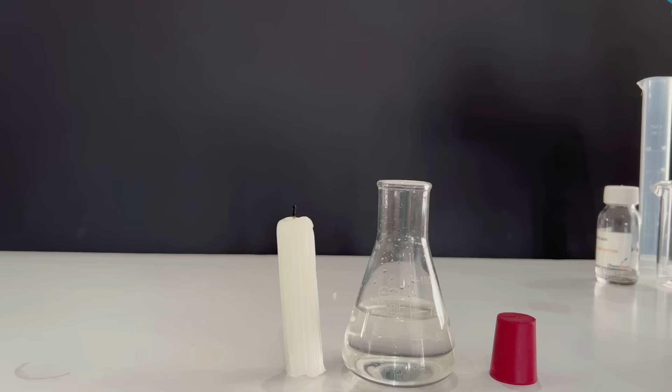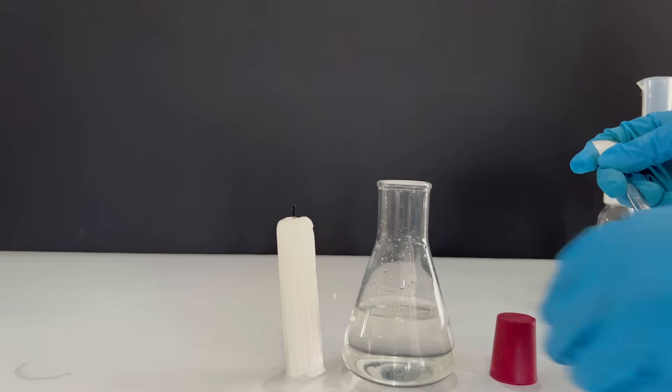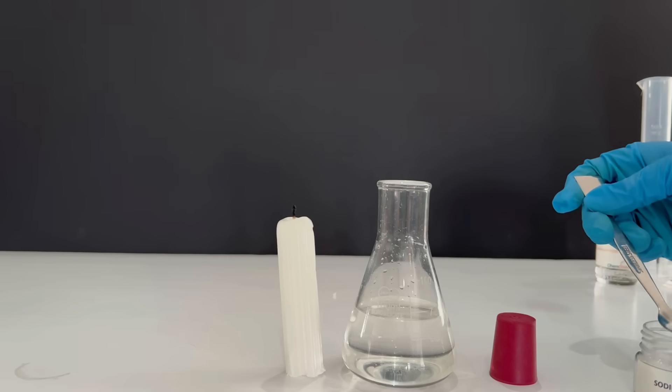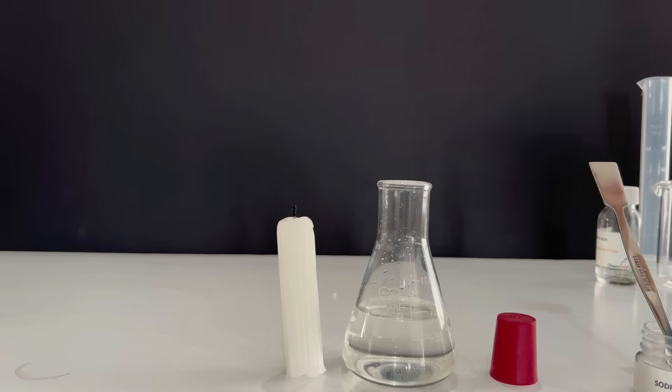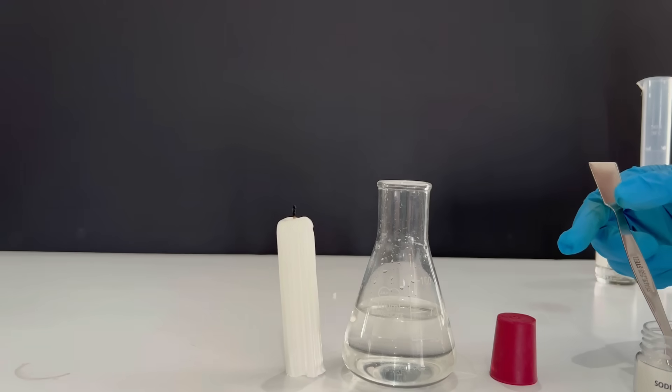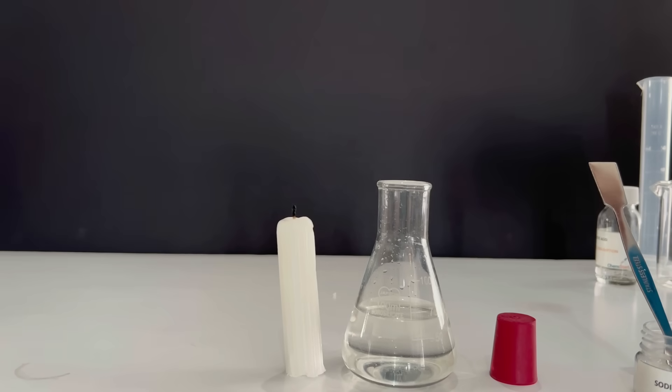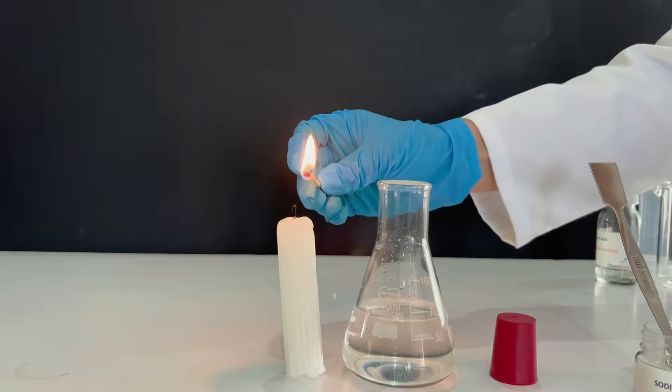We'll measure out half a spatula of sodium bicarbonate and hold the stopper close by, because as soon as you add the sodium bicarbonate, you have to add the stopper directly after that. Otherwise some of the carbon dioxide will escape and we need as much of the carbon dioxide as possible. Let's light the candle.